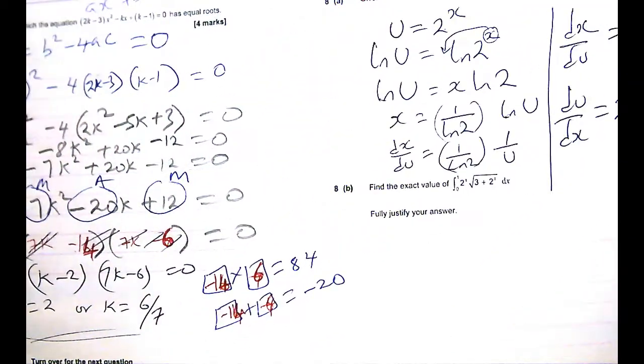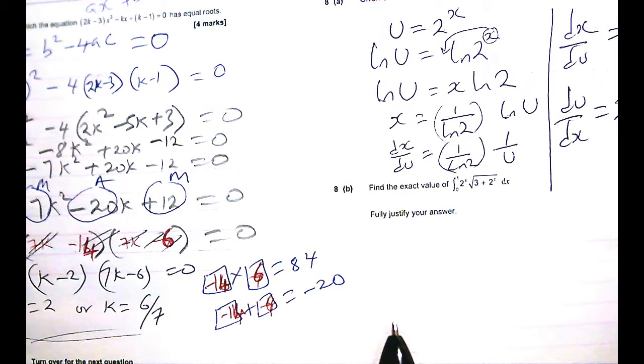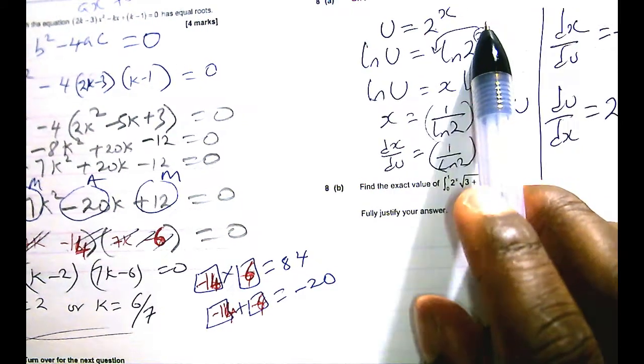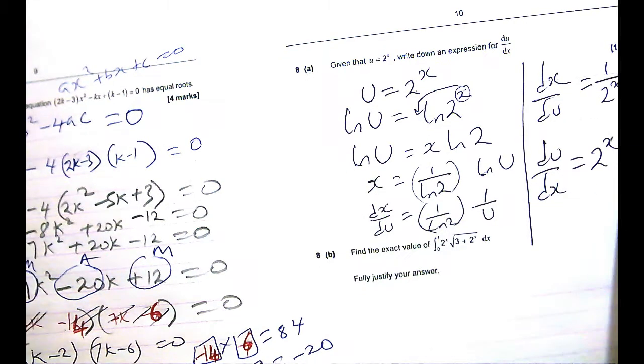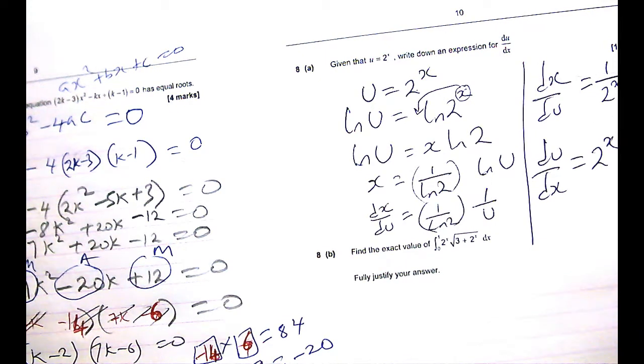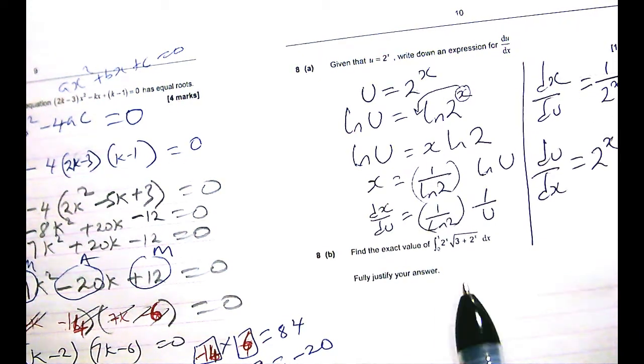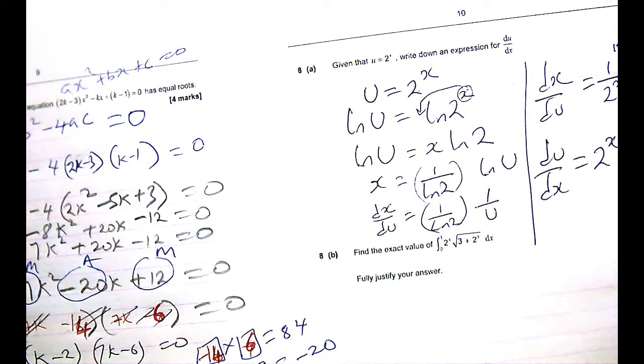Alright. Question 8b then says, find the exact value of integral from 0 to 1 of 2 to the x root 3 plus 2 to the x. Now, this is leading from that question because now we know what the derivative of 2 to the x is. So if we ever have to use integration by substitution or anything, we should know what to do.